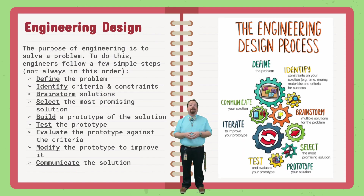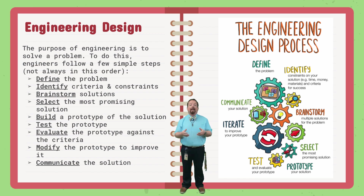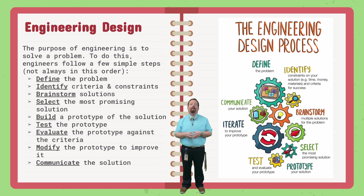The engineering design process consists of multiple steps, not always in an exact order. You've got a copy of the chart to glue into your notebook — be sure to write the correct names of the steps in the blanks. Before you can really start the engineering design process, you have to define what your problem is. If you don't know what problem you're trying to solve, you don't have a direction to go with in your design process. Then you want to identify any criteria and constraints your design will have.